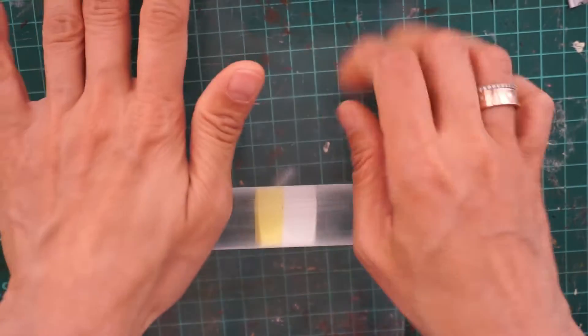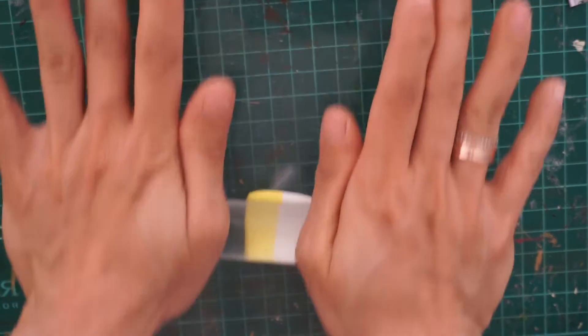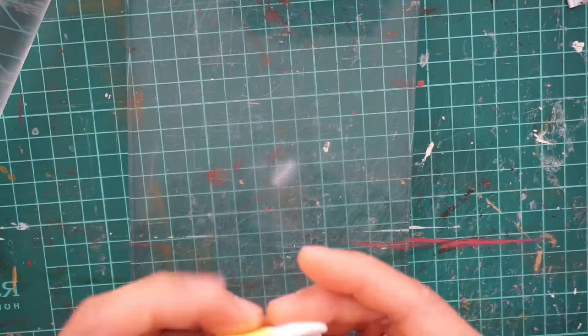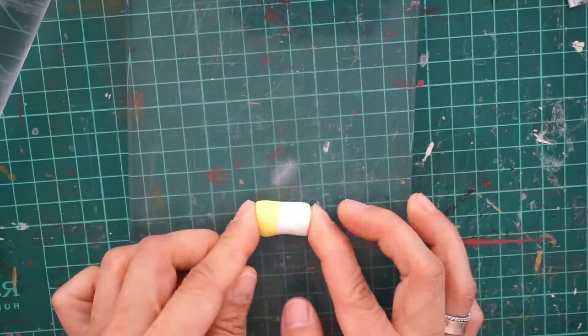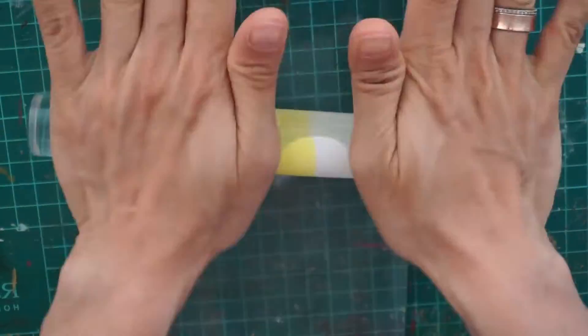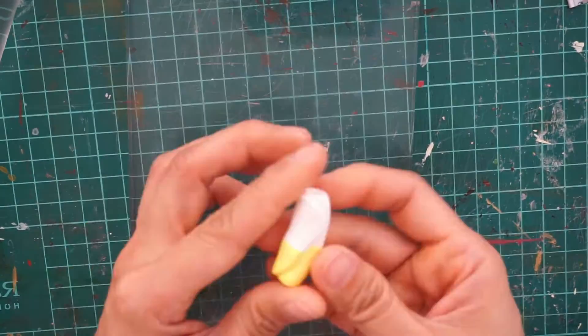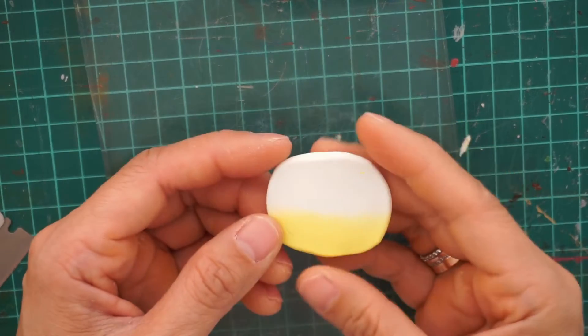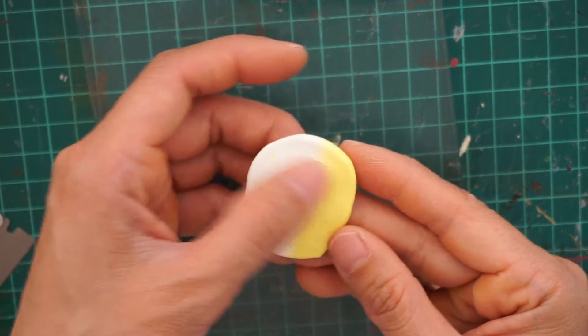Press and roll it crosswise. Remember, press and roll crosswise and not lengthwise. Do this action several times until you get the gradient color. This is how it looks like after many times of rolling, folding, and pressing.